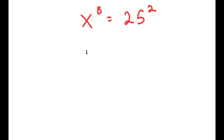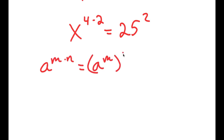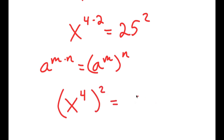To solve this, I'm going to first rewrite this as x to the power of 4 times 2 is equal to 25 squared. Using the property that a to the power of m times n equals a to the power of m to the power of n, x to the power of 4 times 2 equals x to the power of 4 to the power of 2, and this is equal to 25 squared.